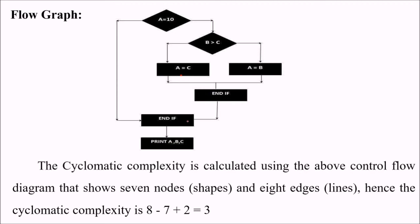The cyclomatic complexity which we can calculate using this above control flow graph. Now we have how many nodes here, or how many shapes here: 1, 2, 3, 4, 5, 6, 7. There are 7 nodes. How many edges are there, means lines: 1, 2, 3, 4, 5, 6, 7, 8. There are 8 number of lines.